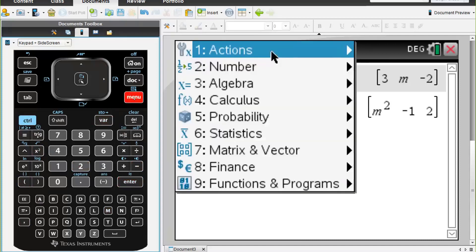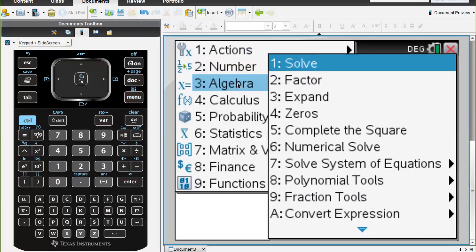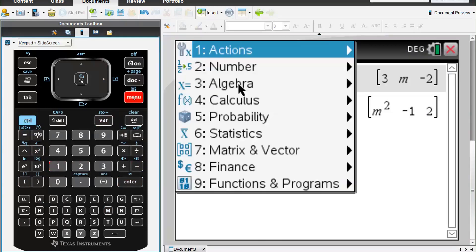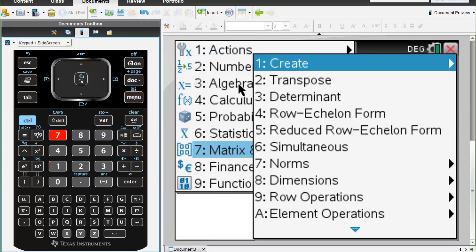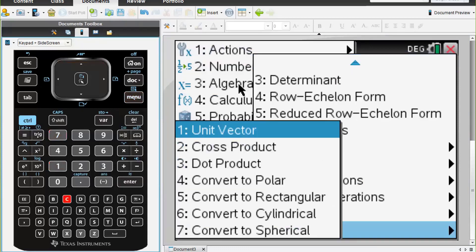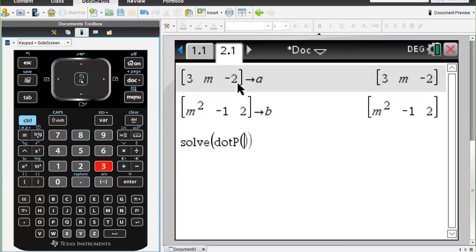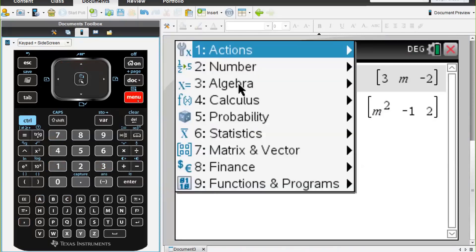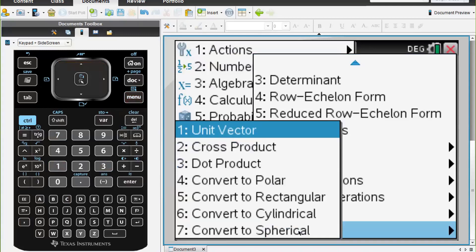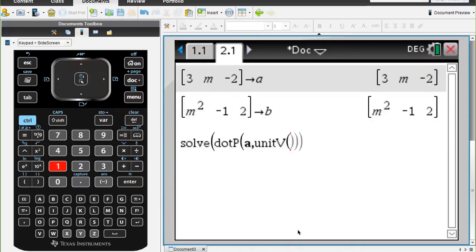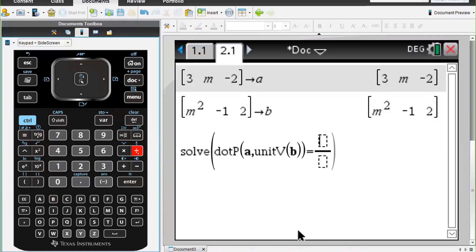This time we need to solve our equations. So menu algebra 1 solve, and we'll have to go menu 7 up arrow for c, and we need to do the dot product which is 3, and we have a comma unit vector b. Menu, matrix and vector, vector, and unit vector 1, and we want b in there. And we get outside the brackets, equals, roll divide, 2 root 21 on 7, comma m.